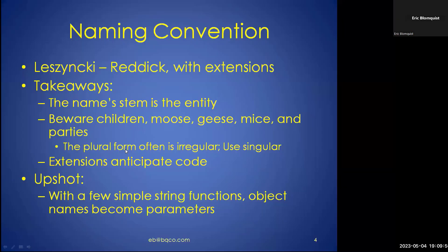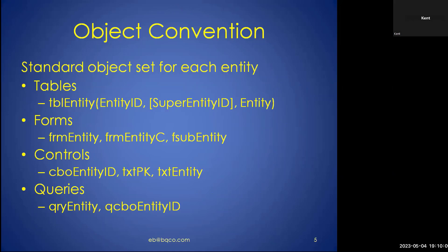In all of these cases, we're looking to the name of the object. The upshot is that if you add just a few simple string procedures, your object names become parameters — you don't need to do anything else. The capital C suffix to indicate a continuous form is really nice; it makes it quite obvious and it's easy to inspect for it or to add or delete it as the case may be.